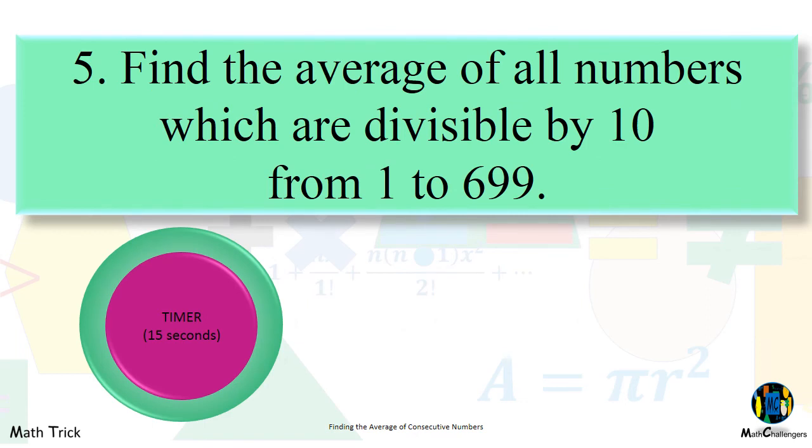5. Find the average of all numbers which are divisible by 10 from 1 to 699.